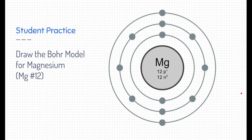12 protons, 12 neutrons in the nucleus, three rings because it's in the third row of the periodic table. And in each row, the first ring has two, the second ring has eight, and the third ring has two electrons.